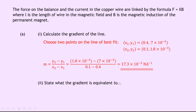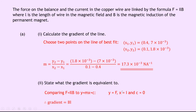Part A2 says to state what the gradient is equivalent to. We compare our equation F = ILB with the straight line equation y = mx + c. Since force F is on the y-axis and current I is on the x-axis, and the line passes through the origin so c = 0, the gradient equals F/I. Rearranging F = ILB gives F/I = LB, so the gradient is equivalent to B × L.